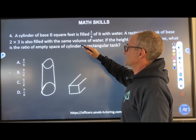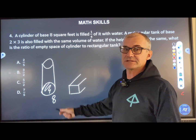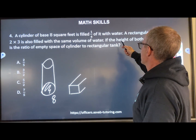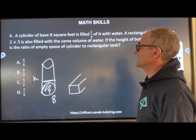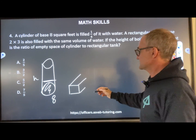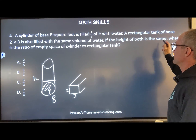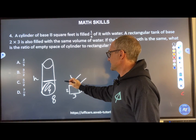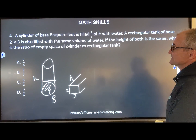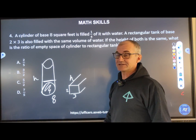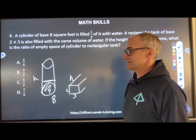Number four: a cylinder has a base of eight square feet. It's filled a quarter of the way with water. A rectangular tank with a base of two by three is also filled with the same volume of water, and the height of both is the same. What is the ratio of empty space of the cylinder to the rectangular tank? There's a lot going on here — it's a hard problem. We've got volumes, ratios, and the distinction between full versus empty space.